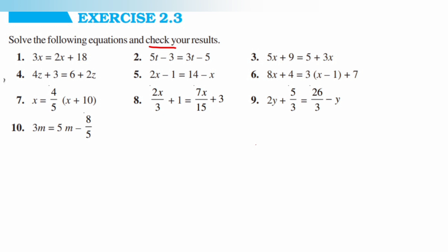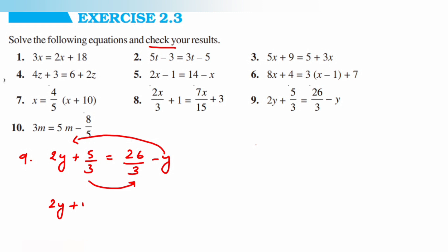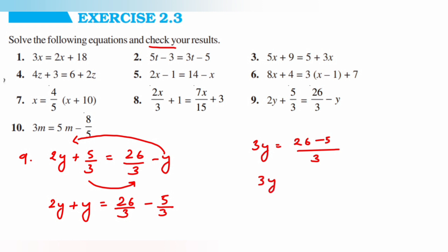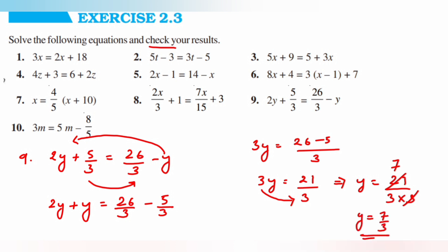The ninth question is 2y plus 5 upon 3 is equal to 26 upon 3 minus y. Transpose y to the left and 5 upon 3 to the right: 2y plus y is equal to 26 upon 3 minus 5 upon 3. So 3y is equal to (26 minus 5) upon 3, which is 21 upon 3. Transposing 3 gives y is equal to 21 upon 9, which cancels to y is equal to 7 upon 3.